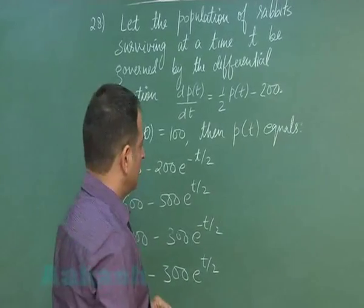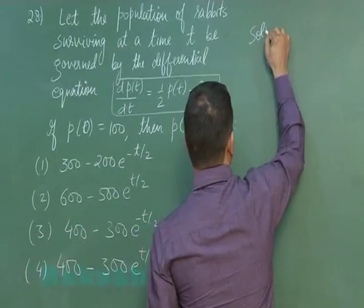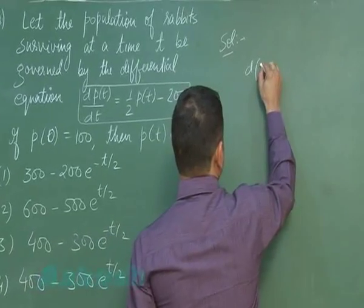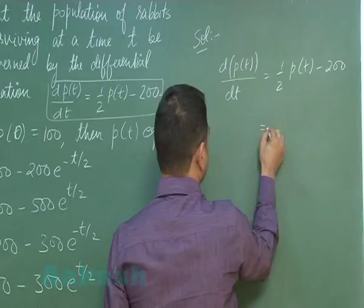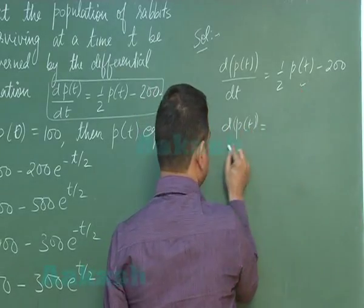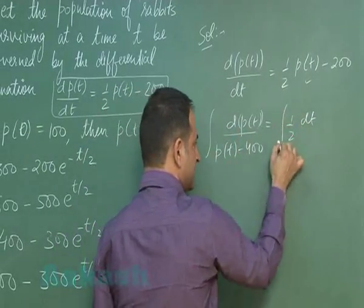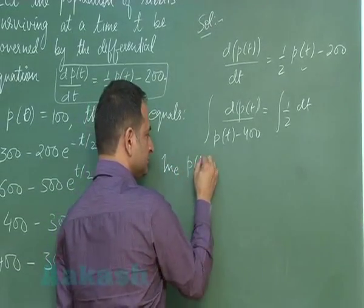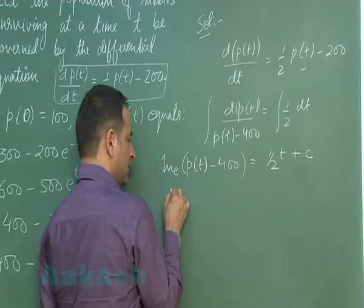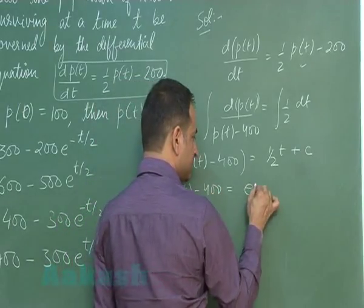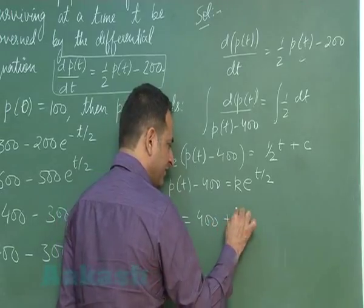We need to find the population as a function of time. A very simple differential equation is given. Separating variables and integrating on both sides: log(P(t) - 400) = (1/2)t + constant c. Taking the antilog, P(t) - 400 = ke^(t/2), where k is a constant. So the population as a function of time is P(t) = 400 + ke^(t/2).